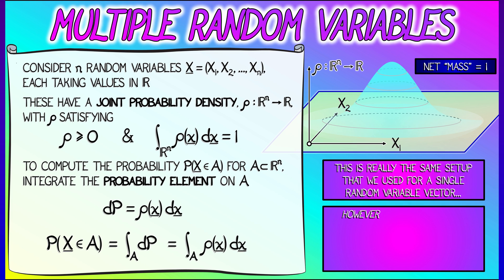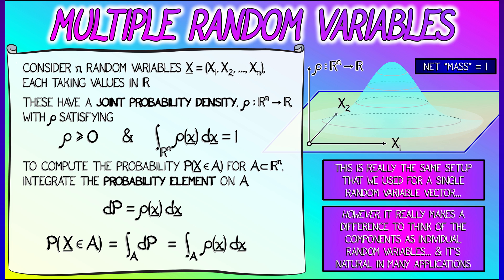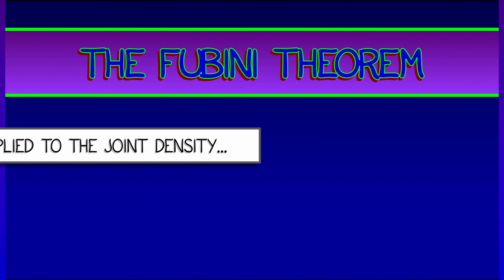But thinking in terms of the components as being individual random variables is going to be helpful to us in a number of applications. And the thing that's going to allow us to do this is the Fubini theorem applied to the joint density.